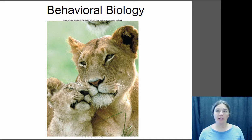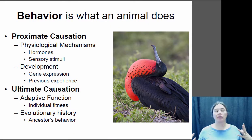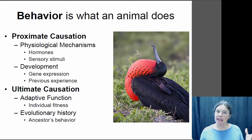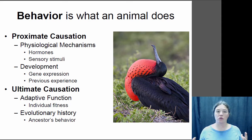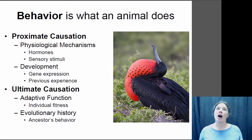Behavior is basically what an animal does. You can look at an animal and see what it's doing, and you can explain its behaviors in two major ways. You can look for what's called a proximate cause of the behavior.